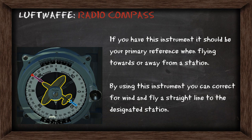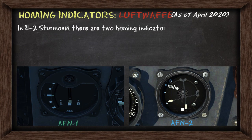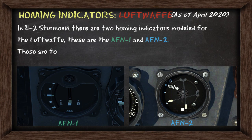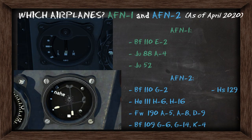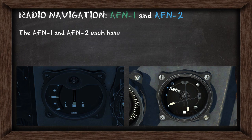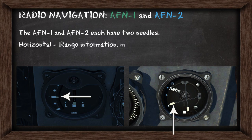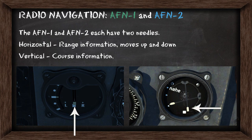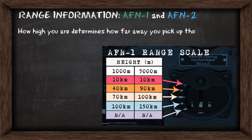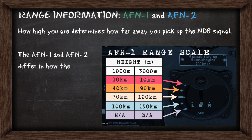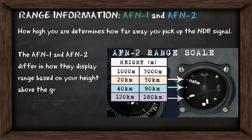Now we'll look at the basics of the AFN homing indicators. In IL-2, you've got two homing indicators modelled for the Luftwaffe: the AFN1 and AFN2. These instruments are for homing, which results in a curved path towards the station because you can't correct for wind. The AFN1 and AFN2 each have two needles: the horizontal one gives you range information and moves up and down, and the vertical needle provides your course information and swings left and right. How high you are determines how far you can pick up the NDB signal, and the AFN1 and AFN2 differ in how they display the range based on your height above the ground.